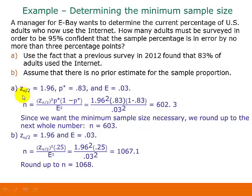For part A, we already found a critical value for 95% confidence interval is 1.96. In this one, we're using our prior estimate of 83%, or 0.83, and our margin of error that we want is 0.03. That comes from up here, where we said we wanted the sample percentage to be in error by no more than 3 percentage points. 3 percentage points is saying 3% for our margin of error. So again, we have to convert that to a decimal form.